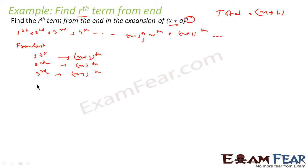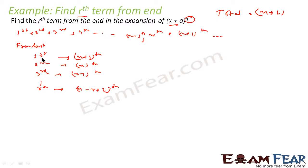Following this pattern, the rth term from the last is the (n − r + 2)th term from the front. We can validate: putting r=1 gives n+1 ✓; r=2 gives n ✓; r=3 gives n−1 ✓. So the formula for the rth term from the end is T(n−r+2).